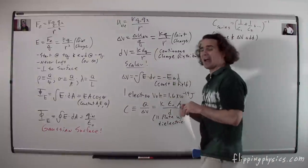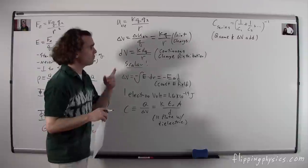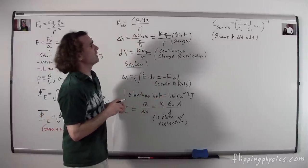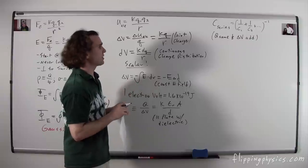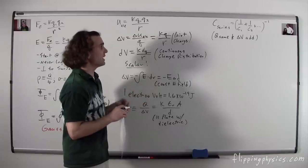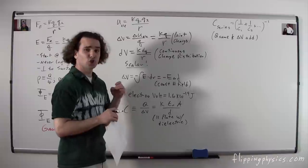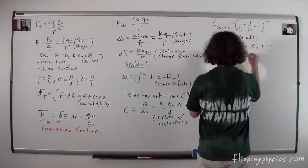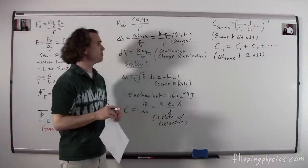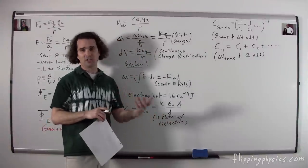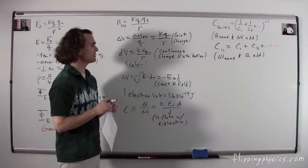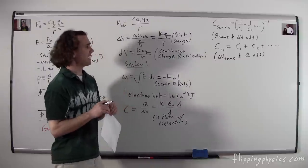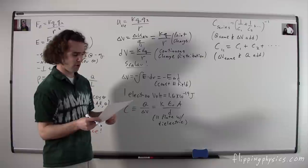For capacitors in series, the equivalent capacitance is the inverse of the sum of the inverses of the individual capacitances. When capacitors are in series, charge is the same and electric potential differences add. For capacitors in parallel, you simply add the capacitances to get the equivalent capacitance. For capacitors in parallel, the electric potential difference is the same and the charges add.